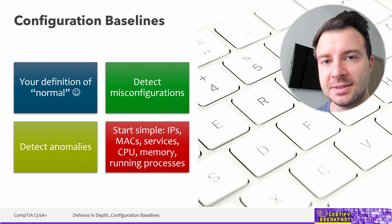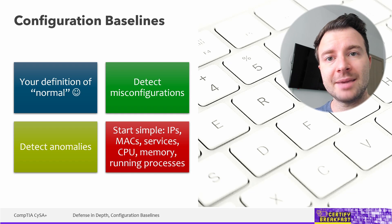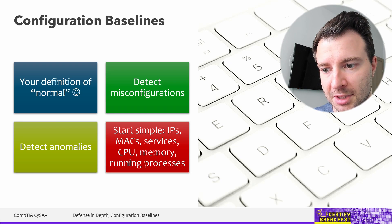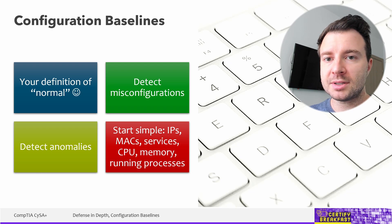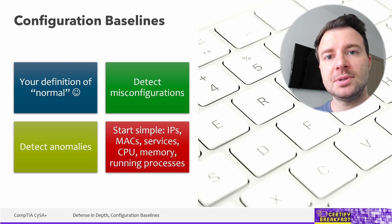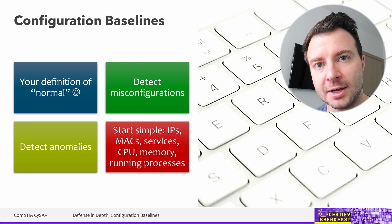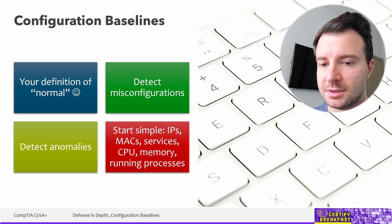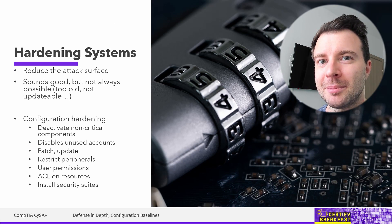You don't have to overcomplicate this. A configuration baseline can be as simple as a list of IP addresses in use in your network, maybe with the associated MAC addresses in order to detect rogue devices. A list of services expected to be running at any point in time on your workstations or servers. How much CPU or memory is usually consumed by your devices. What list of processes you expect, and what applications are whitelisted on your workstations. A little information goes a long way. And of course, we can't mention workstations without talking about system hardening.